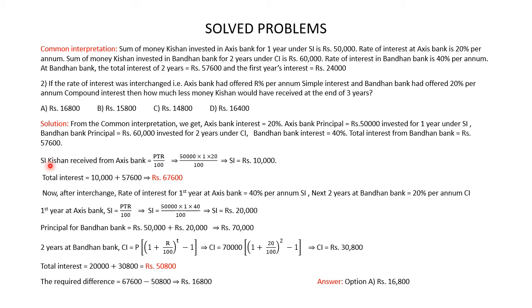The first year interest at Axis Bank received by Kishan is simple interest, which is principal multiplied by time multiplied by rate of interest divided by 100. On substituting the values, we get simple interest equal to 50,000 multiplied by 1 multiplied by 20 divided by 100. On solving this, the simple interest received by Kishan at Axis Bank is Rs 10,000. The total interest received by Kishan at Bandhan Bank is Rs 57,600. So the total interest received by Kishan for the 3 years is Rs 10,000 plus Rs 57,600, which is Rs 67,600.